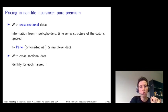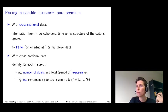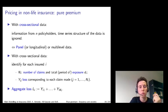In the risk model setting, you identify for each insured i, NI, the number of claims registered during a period of exposure denoted with DI, and you also register YIJ, the random variable that denotes the loss that corresponds to each claim that is made. The J runs from 1 to NI. The total loss, or the aggregate loss, reported by insured i during this period of exposure can be expressed as the sum of the reported losses, the sum of YI1 up to YINI.